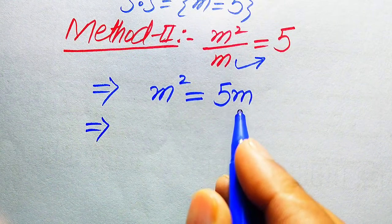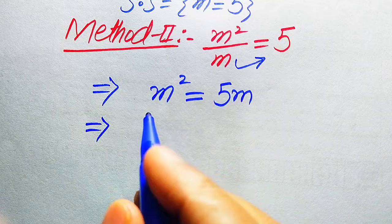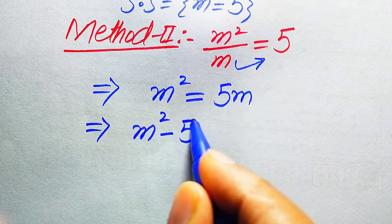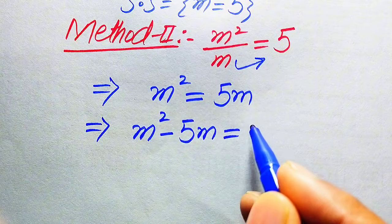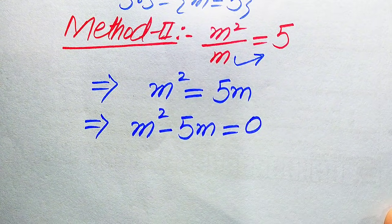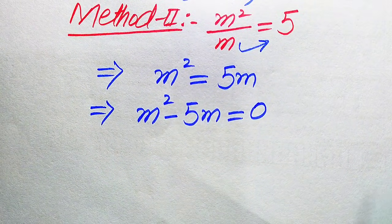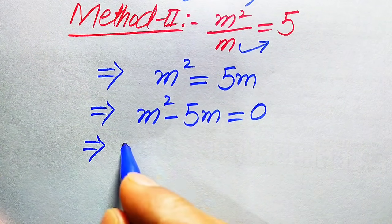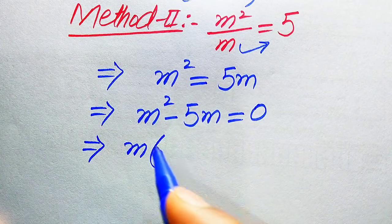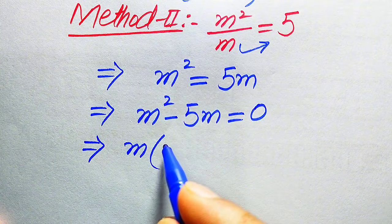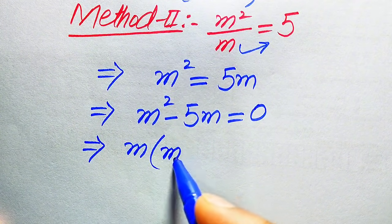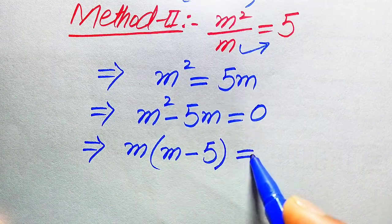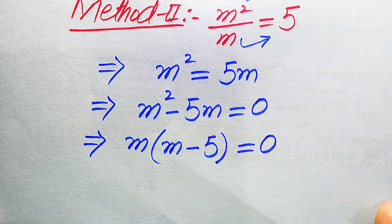Moving 5m to the left hand side gives m squared minus 5m equals 0. We factor by taking m common, resulting in m times (m minus 5) equals 0.